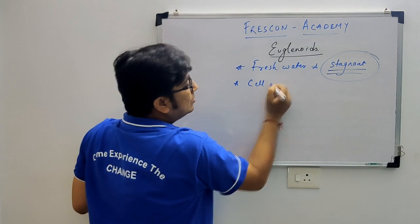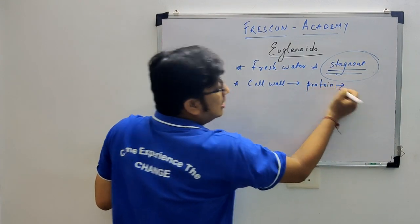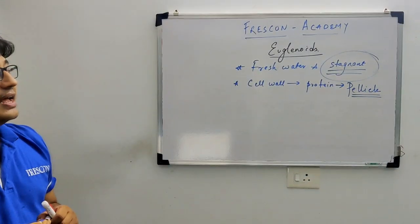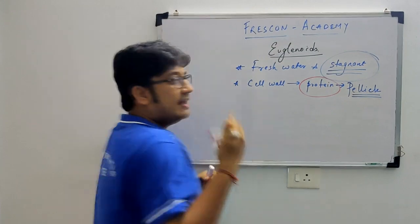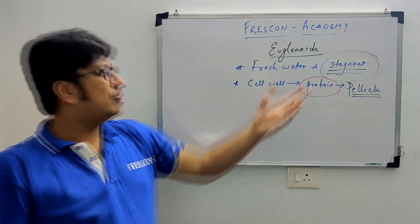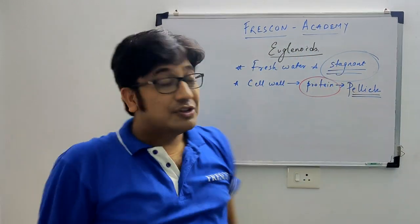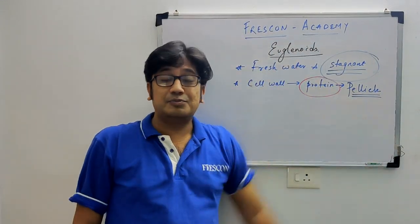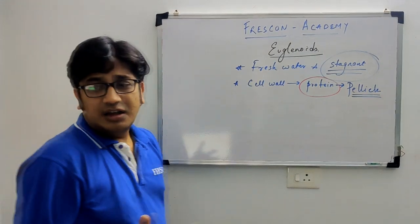Second important point: the cell wall of Euglenoids is very thin, very flexible, and made up of protein. This protein-based cell wall is called a pellicle. Because of the pellicle, Euglenoids can move flexibly — they are very soft and can change shape. So the cell wall of Euglenoids is protein-based and is called pellicle.